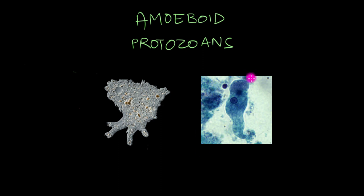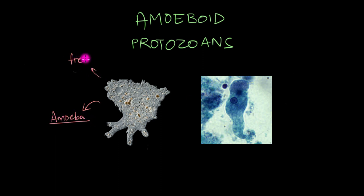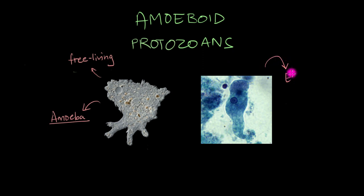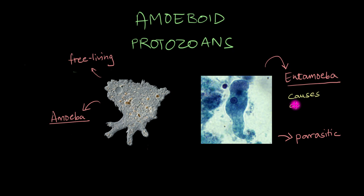Let's start with the amoebas. Amoeboid protozoans, like the ones from the genus amoeba, are free-living protists which are commonly found in freshwater ponds and streams. A bunch of these amoeboid protozoans are also parasitic in nature, like entamoeba, the pathogen that causes amoebic dysentery in human beings.